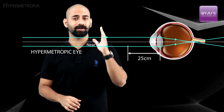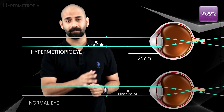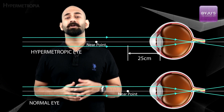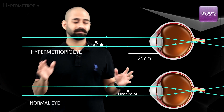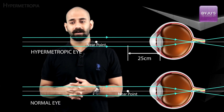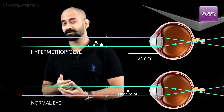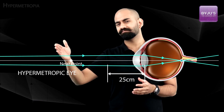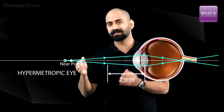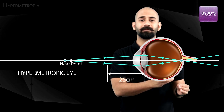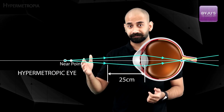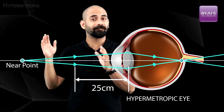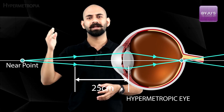Let's analyze this: consider a hypermetropic eye and a normal eye. If the object is at infinity, both eyes can focus the image on the retina without issues. As I bring the object closer, the hypermetropic eye is fine until the object reaches its near point — up to that point the image is still formed on the retina.